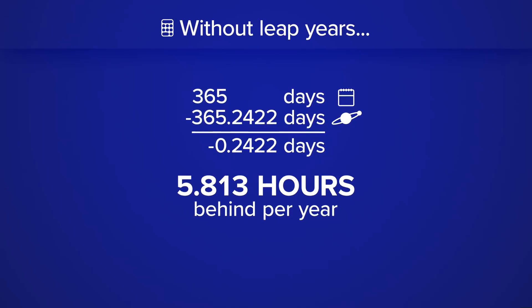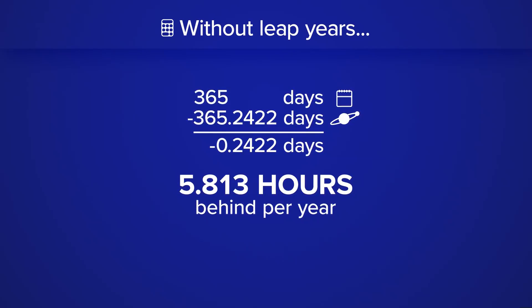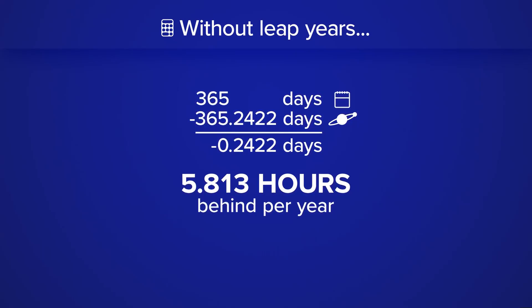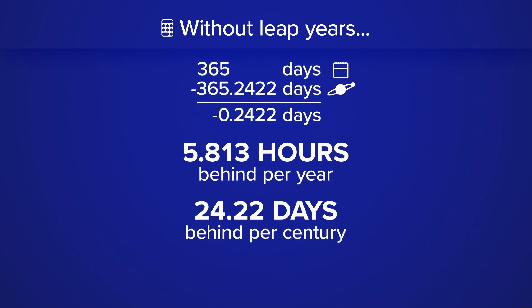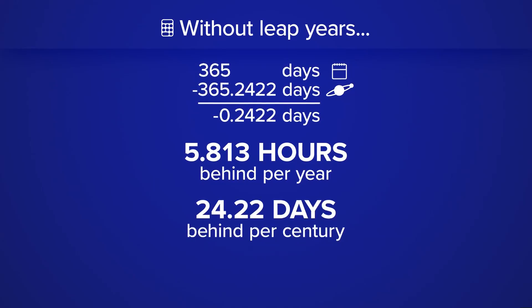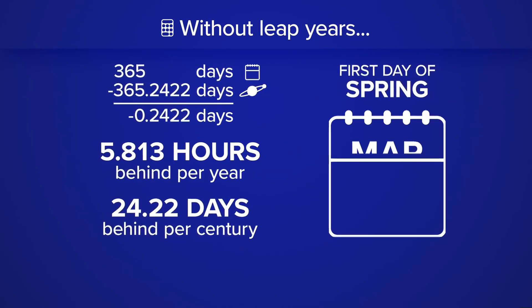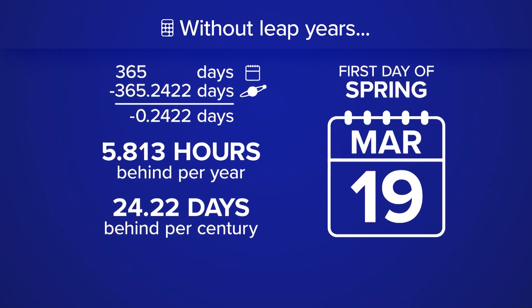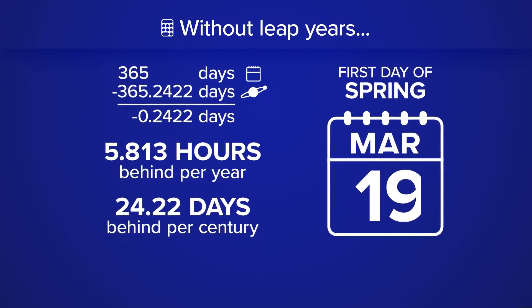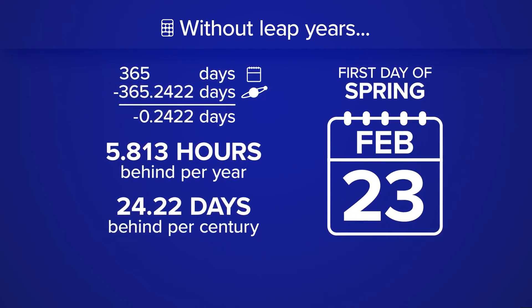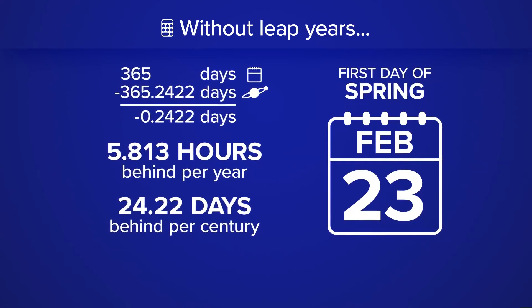While this is a small number, over decades and centuries, this would have an impact on our calendar. In 100 years, our calendars would be off by 24 days. So for example, instead of the first day of spring being March 19th, without a leap year, it would be on February 23rd, and so on and so forth.